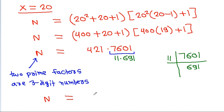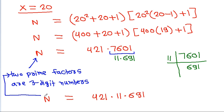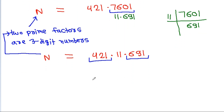So n is equal to 421 times 11 times 691. The two three-digit prime factors of n are 421 and 691. Therefore, 421 plus 691 equals 1112.